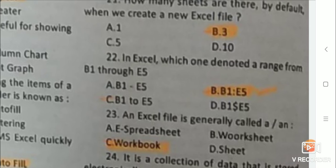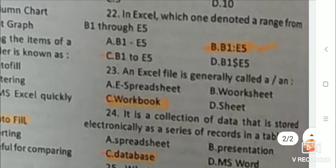Next: An Excel file is generally called a workbook. Next: It is a collection of data that is stored electronically as a series of records in a table. Answer is database.